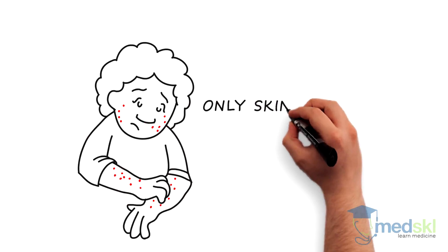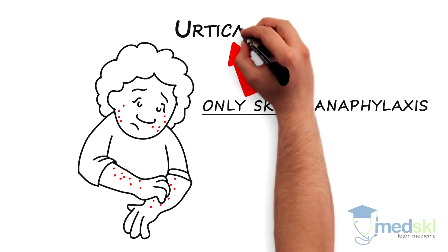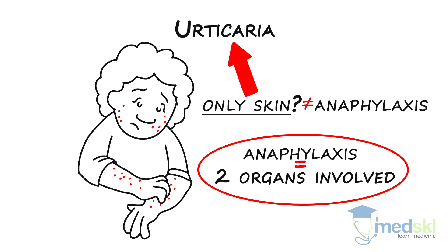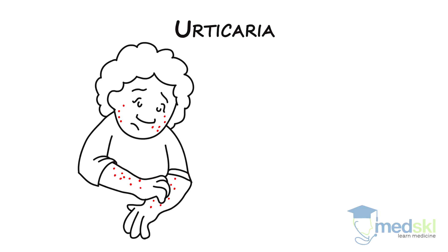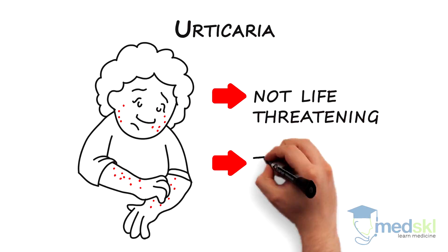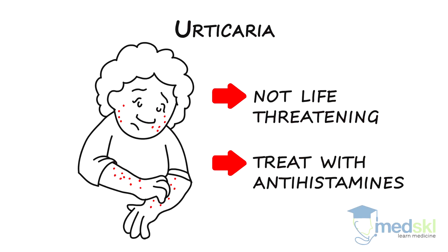If only the skin is involved, it is not anaphylaxis but called urticaria, as anaphylaxis requires two organ systems to be involved. Urticaria presents with an intensely itchy hive-like rash on the trunk, limbs and face. This is not a life-threatening condition and can be treated with antihistamines such as Benadryl for a few days.